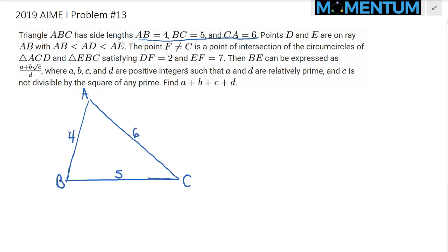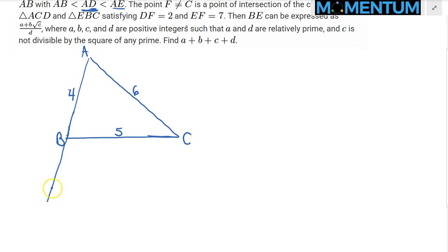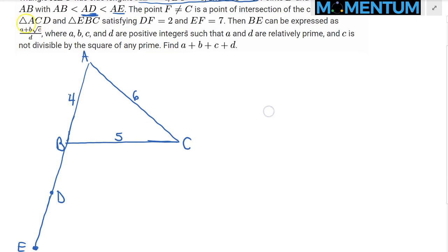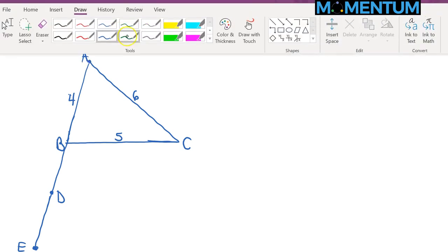We extend AB through B, picking two random points D and E such that AD is smaller than AE. We then draw the circumcircles of triangles ACD and EBC.